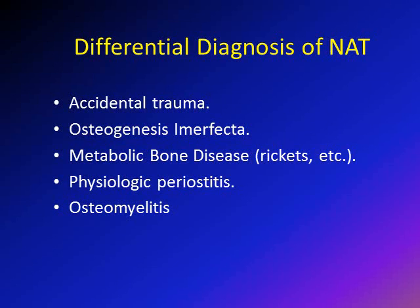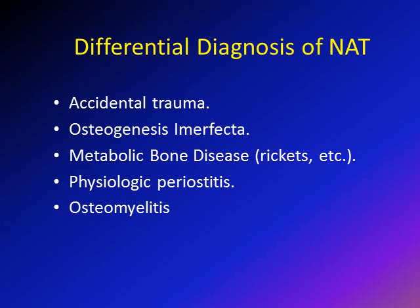It is very important to keep in mind that not every child presenting with multiple fractures or fractures with no obvious history has non-accidental trauma. Other causes include accidental trauma — children regularly run, jump, play, and can sustain high-energy trauma from motor vehicles or bike accidents. Children with bone diseases like osteogenesis imperfecta or metabolic bone diseases like rickets can fracture with minimal trauma. Periosteal reactions can also be seen with osteomyelitis and physiological periostitis. Always keep these differential diagnoses in mind.